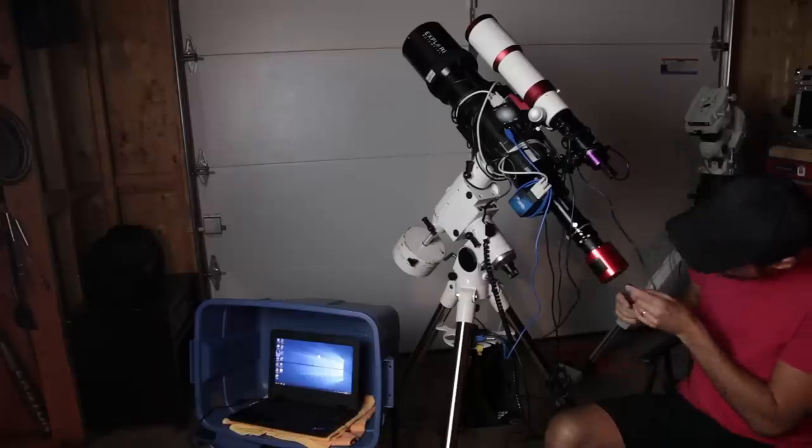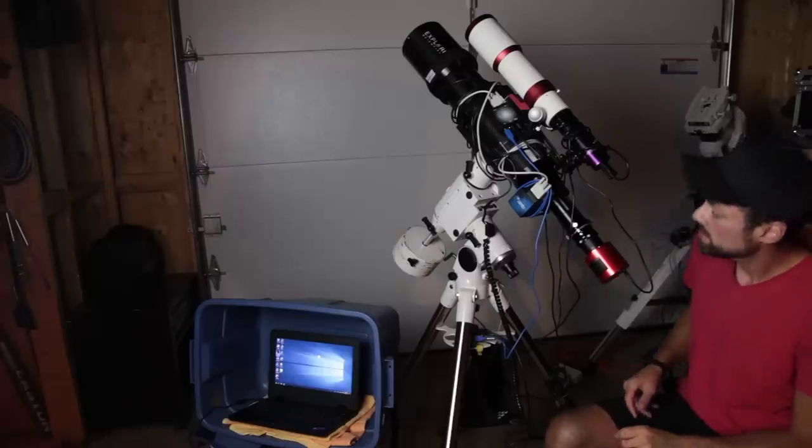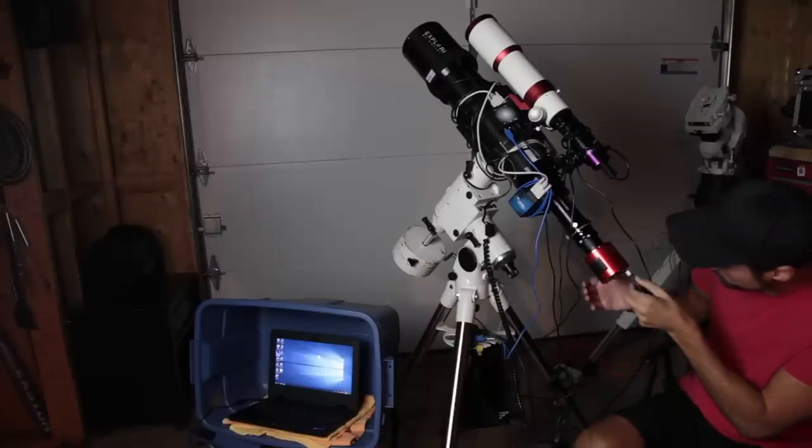So this power cord here is plugging into the back of the ASI 294 and the little red light turns on because it's on and then the next one up is the USB 3.0 cable, which we will plug into the back.